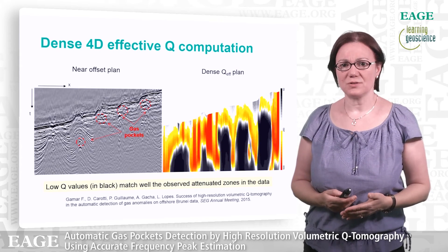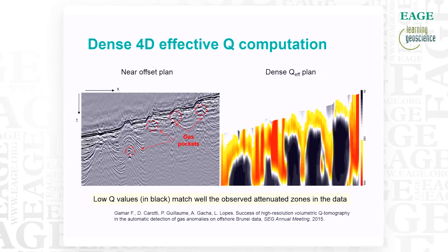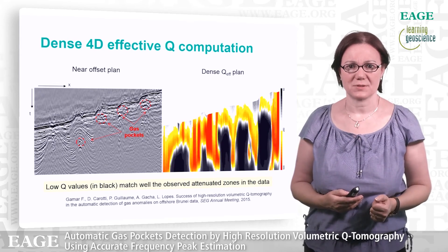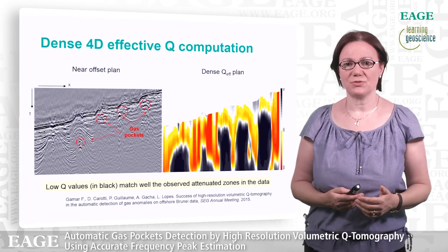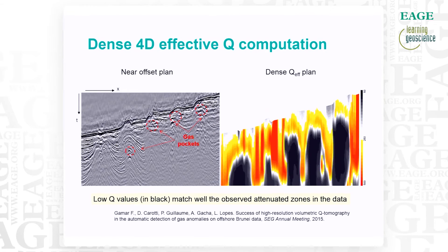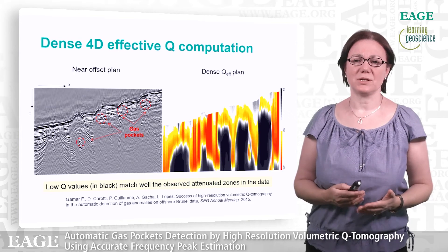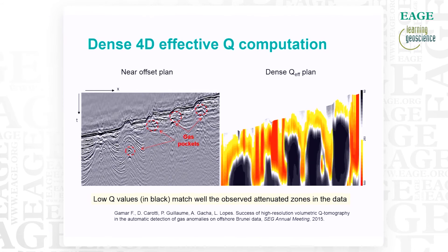On the right-hand side, we have the associated effective Q computed continuously by frequency peak shift. We can clearly see that the areas of low Q values, in black, match quite well the location of the shallow gas anomalies. This dense effective Q will feed our tomographic inversion to check the capability of our method to automatically detect the gas anomalies without any a priori information on their localization.